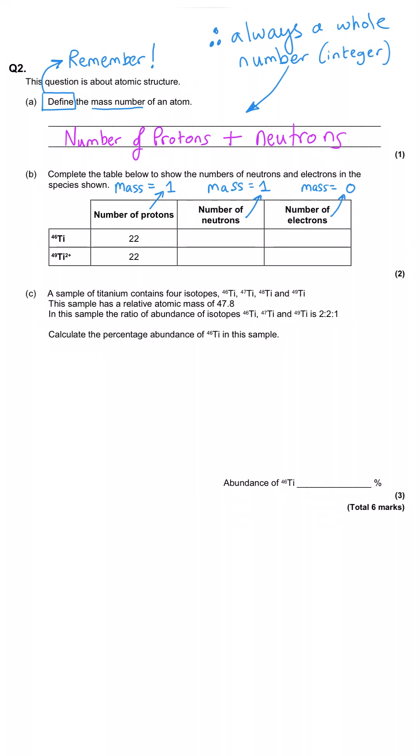In Part B, complete the table below to show the numbers of neutrons and electrons in the species shown. First of all, we've got titanium-46. So the mass number is 46. That means that the number of protons added to the number of neutrons is equal to 46. Now, titanium has a proton number of 22. So when we subtract that 22 away from the 46, we get 24 neutrons in the nucleus of titanium. And in titanium-49, the mass number is this time 49. So 22 protons subtracted away from 49 gives us 27 neutrons.